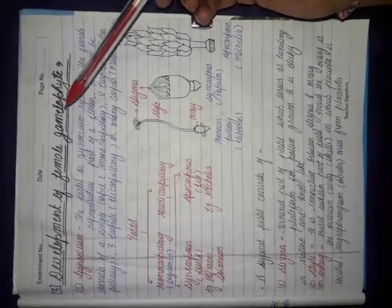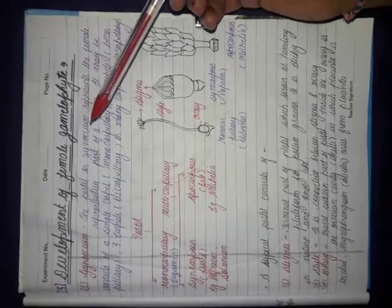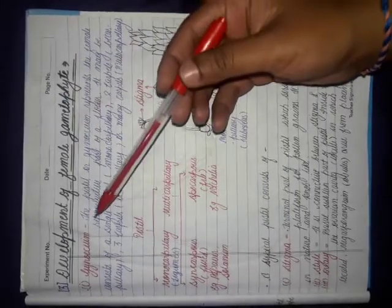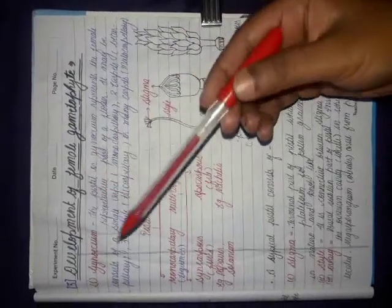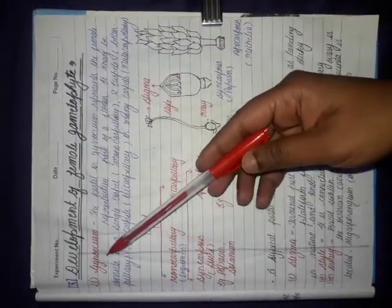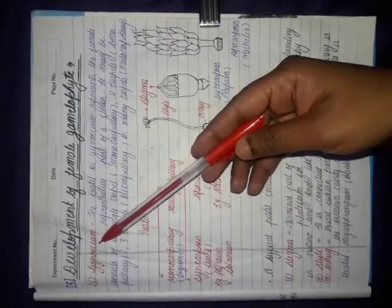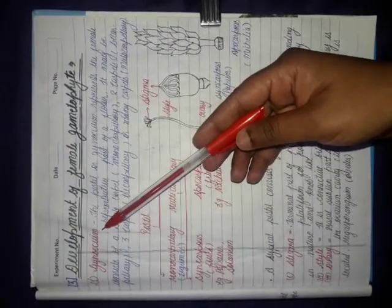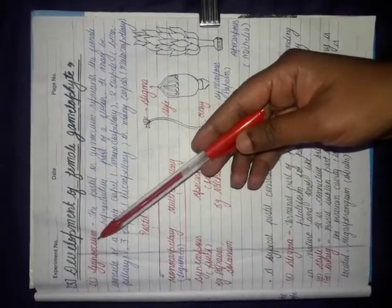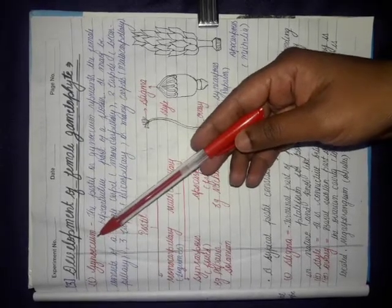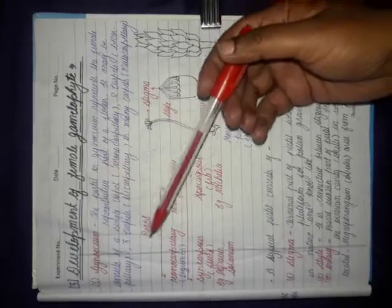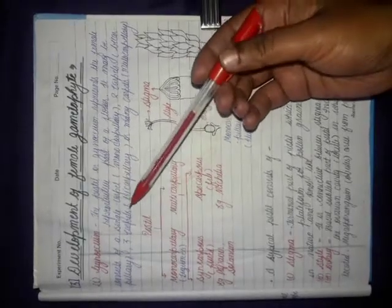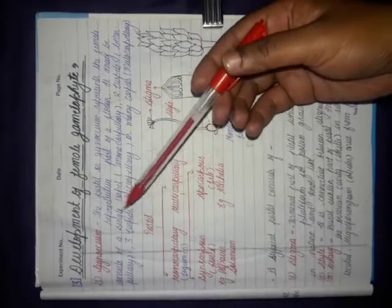In this video we will discuss about the development of female gametophyte under different topics. The first topic is the gynoecium. The gynoecium is the female reproductive part of a flower, and it is also known as the pistil or carpel.